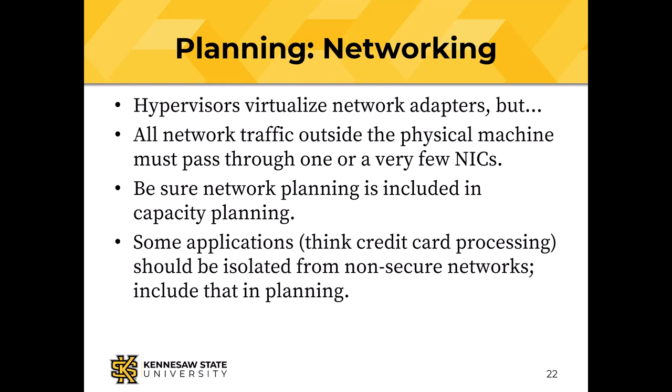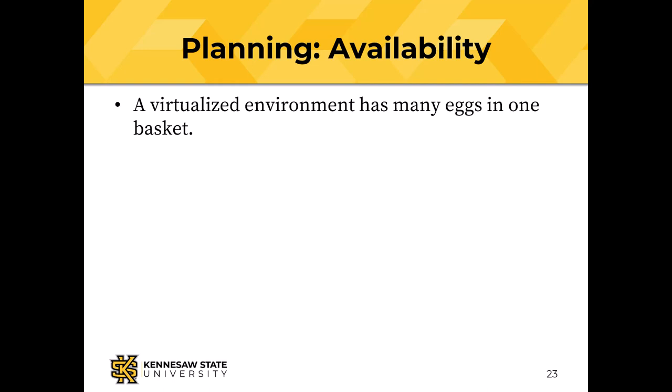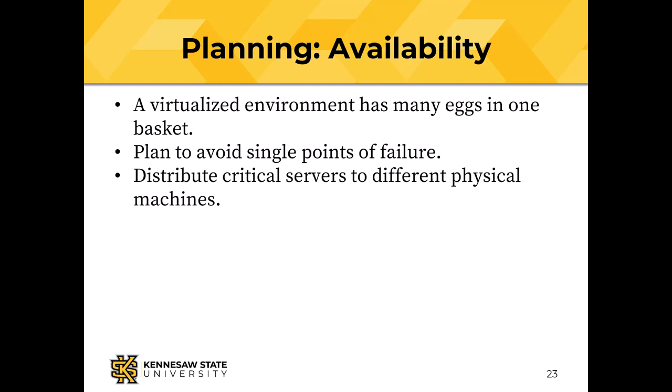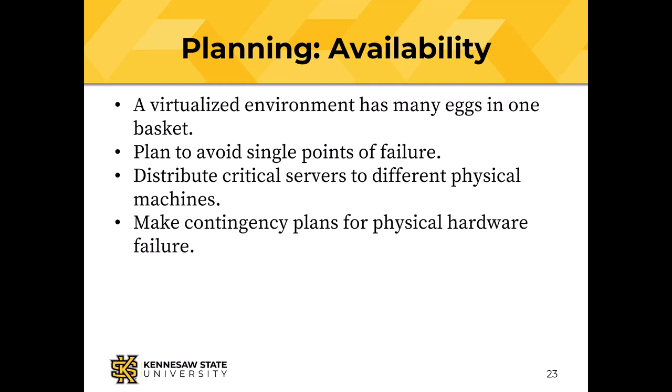Some applications, like credit card processing, should probably be isolated from non-secure networks. Then there is availability: if I'm virtualizing machines using smaller numbers of hardware servers, I have many eggs in each basket, so now you need to watch the basket. Plan to avoid single points of failure — one thing fails and you're doomed. Distribute critical servers to different physical machines; if you have two or three critical applications, don't put them all on the same virtual machine, because if it dies, all your critical applications are dead. Make those plans before you've bought anything, while you're still planning, and figure out what you're going to do when the hardware does eventually fail — because it will.